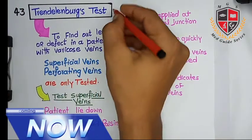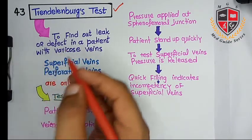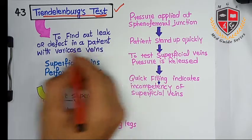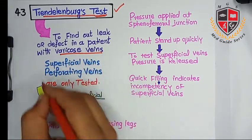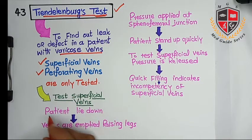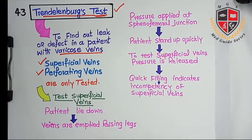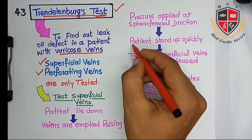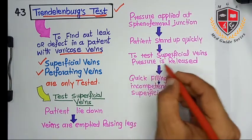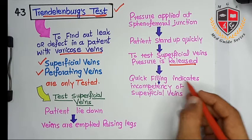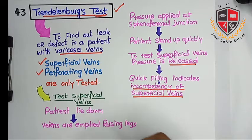The next clinical topic is the Trendelenburg test. Previously there was a Trendelenburg sign, but this is the Trendelenburg test. It is used to find out the leakage or defect in a patient with varicose veins. To test the superficial veins, the patient is made to lie down, veins are emptied by raising the legs, pressure is applied at the saphenofemoral junction, and the patient is made to stand up quickly.